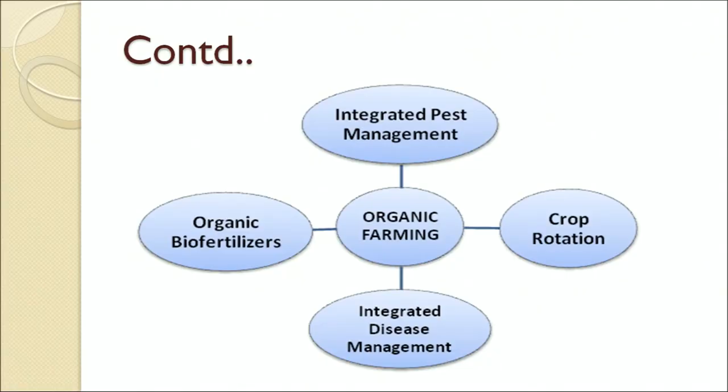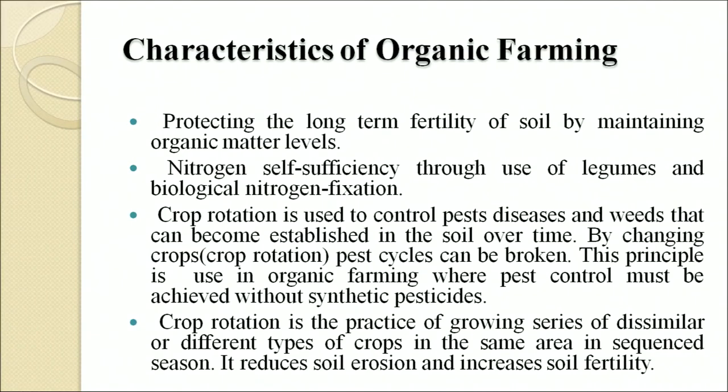Principles of organic farming include protecting the long-term fertility of soil by maintaining organic matter levels, achieving nitrogen self-sufficiency through use of legumes and biological nitrogen fixation. Crop rotation is used to control pest diseases and weeds by changing the crop sequence over time. This principle is used in organic farming where pest control must be achieved without synthetic pesticides. Crop rotation is the practice of growing a series of dissimilar or different types of crops in the same area in sequential seasons; it reduces soil erosion and increases soil fertility.